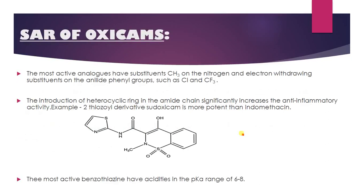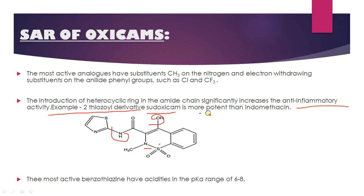Structure-activity relationship of oxycams: the 4-hydroxy group is essential for biological activity. The 1,2-benzothiazine scaffold is important. The most active analogues have a methyl substituent on the nitrogen and electron-withdrawing substituents on the anilide phenyl group, such as chlorine and trifluoromethyl at that position. Introduction of a heterocyclic ring in the amide chain significantly increases anti-inflammatory activity — for example, the 2-thiazolyl derivative pseudoxicam is more potent than indomethacin. Replacing hydrogen with a heterocyclic ring system increases biological activity. The most active benzothiazines have acidity in the pKa range of 6 to 8.